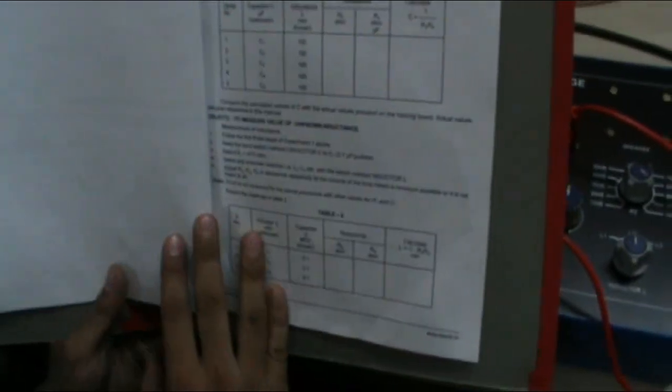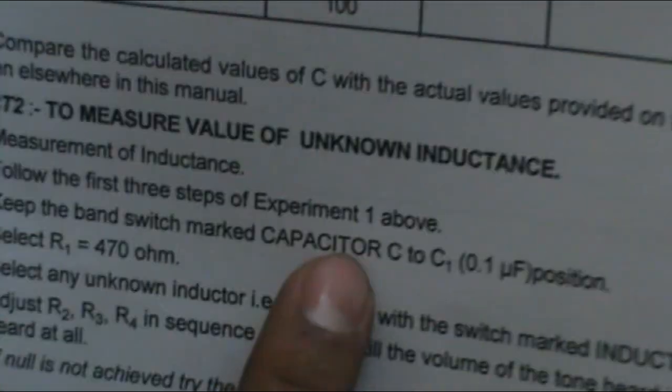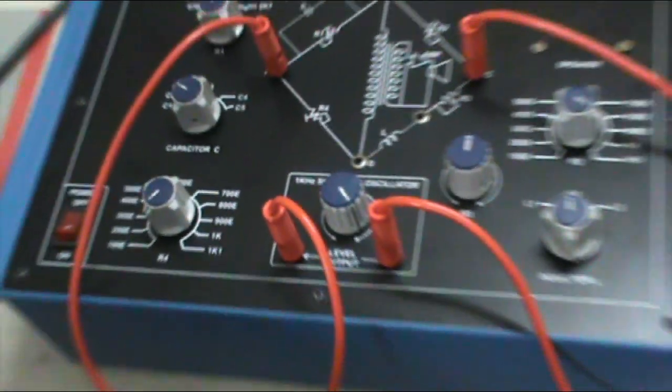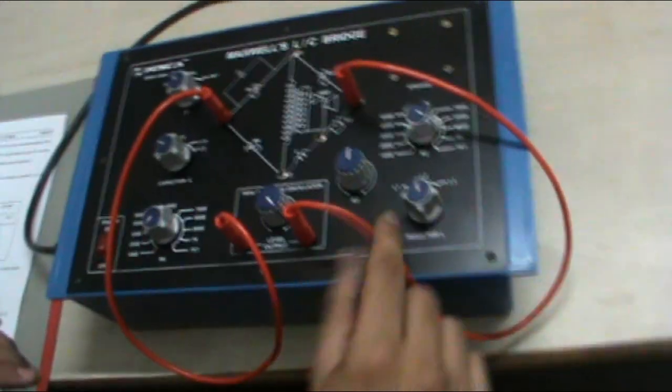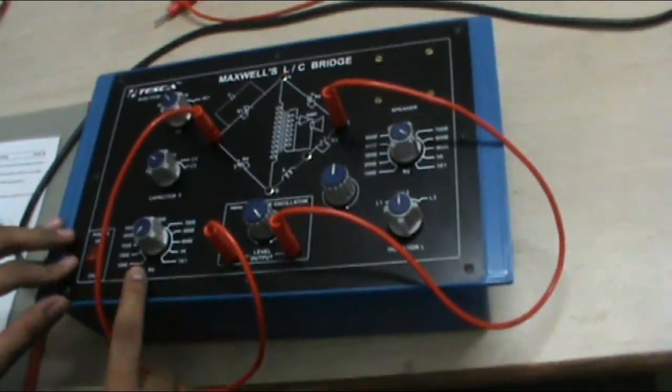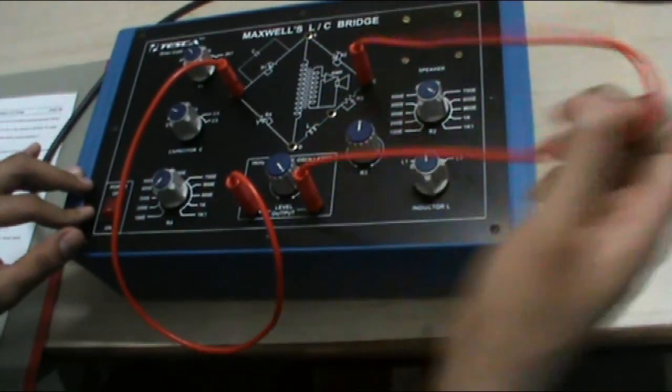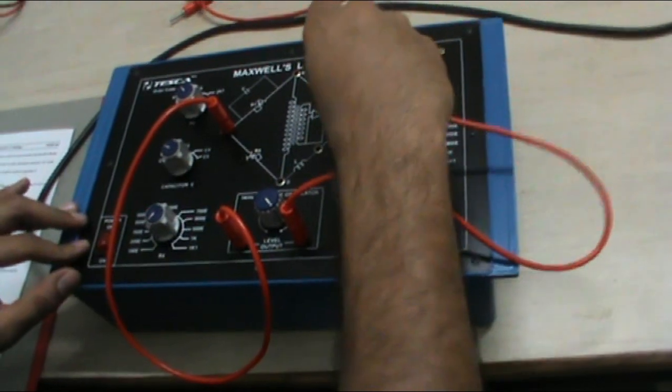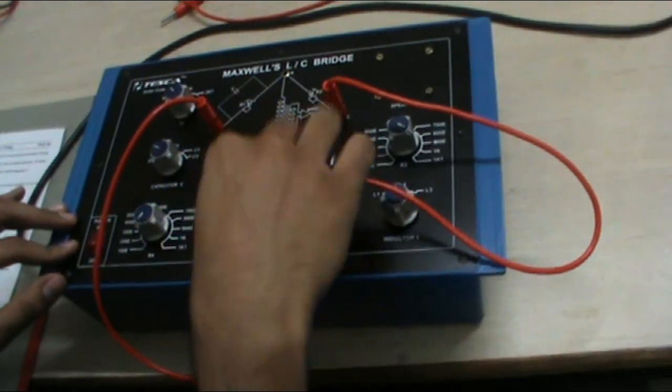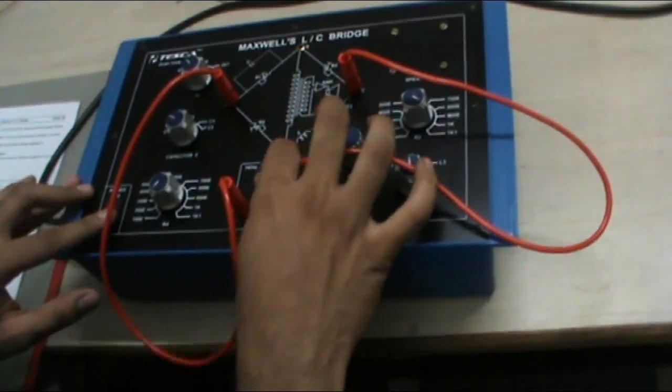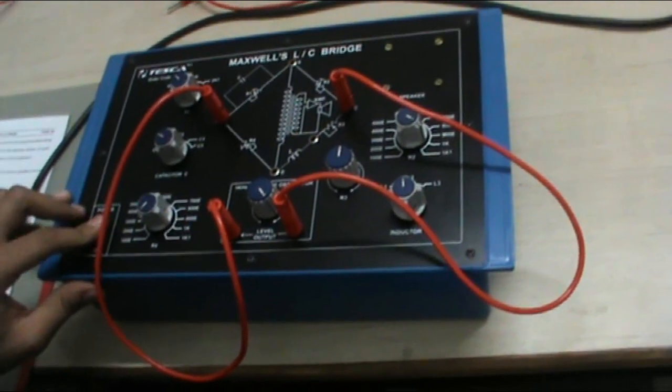Now we move to experiment 2. In experiment 2 the objective is to measure the value of unknown inductance. The connections we have to make are the same as in experiment 1. Connect negative point of the oscillator to C and positive to A. Turn it completely clockwise and turn the mains power on.